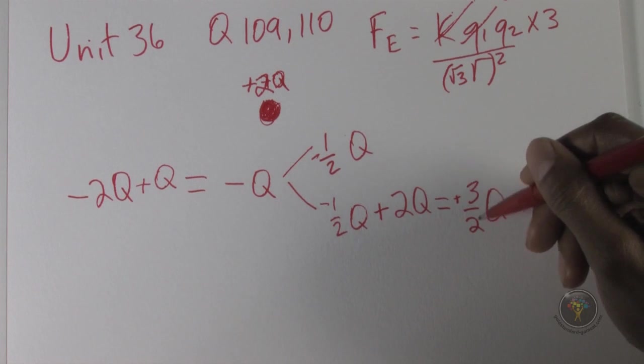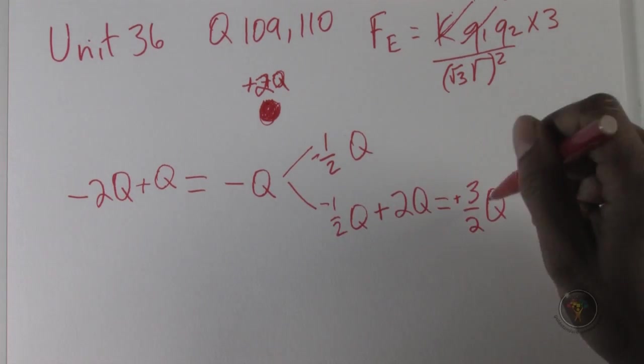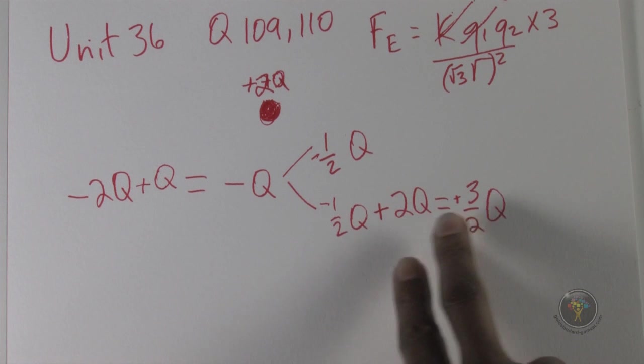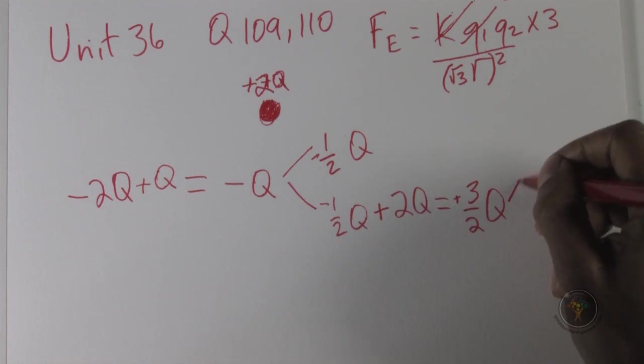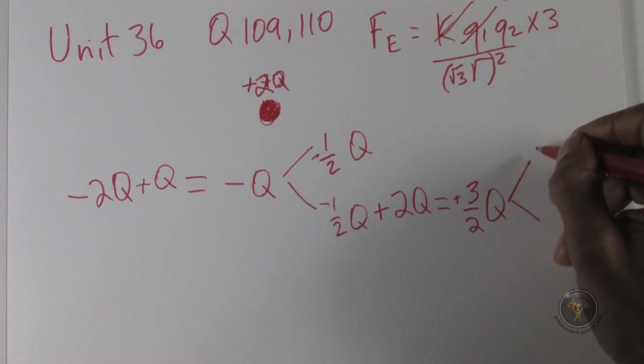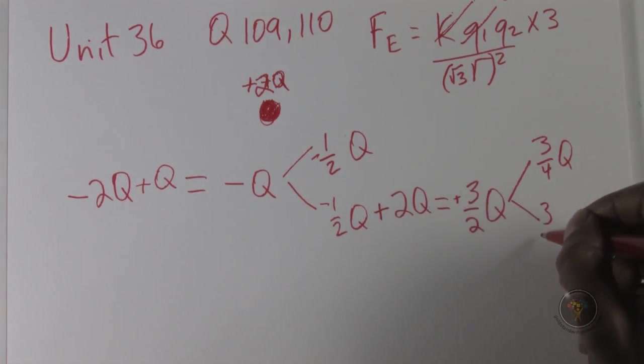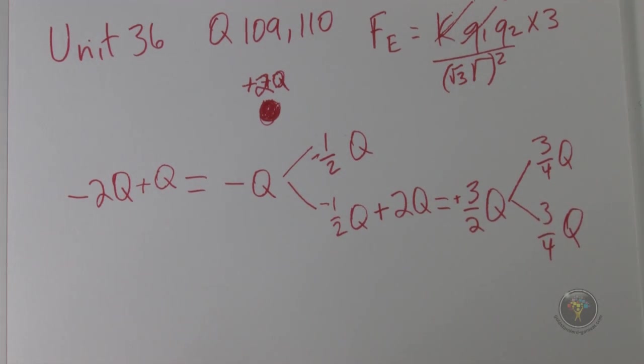We have plus three halves q, but this plus three halves q is in two spheres, so we're going to split that again. We have three quarters q up here and three quarters q over here.